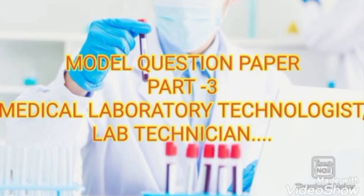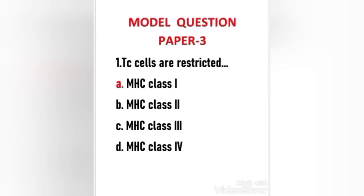First question: TC cells are restricted to — (a) MHC class 1, (b) MHC class 2, (c) MHC class 3, (d) MHC class 4. The right answer is option A. TC cells are restricted to MHC class 1. Cytotoxic T cells, or TC cells, are small T lymphocytes derived from stem cells in the bone marrow. These cells mature in the thymus.